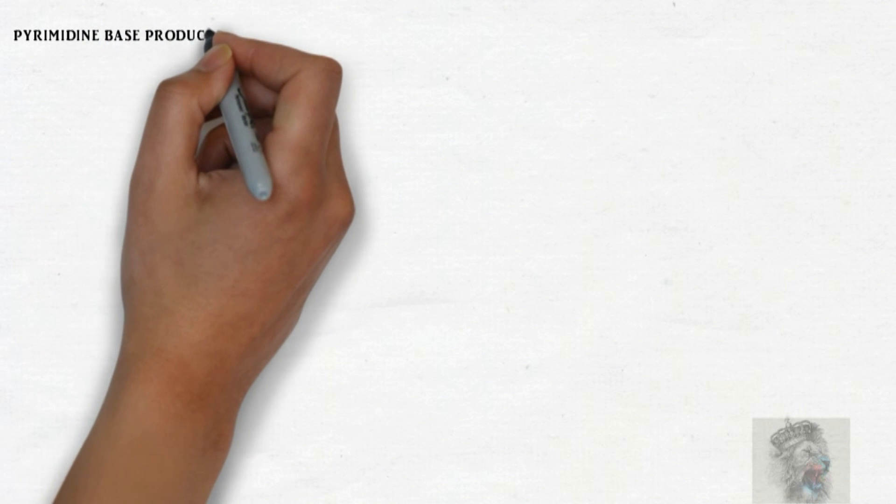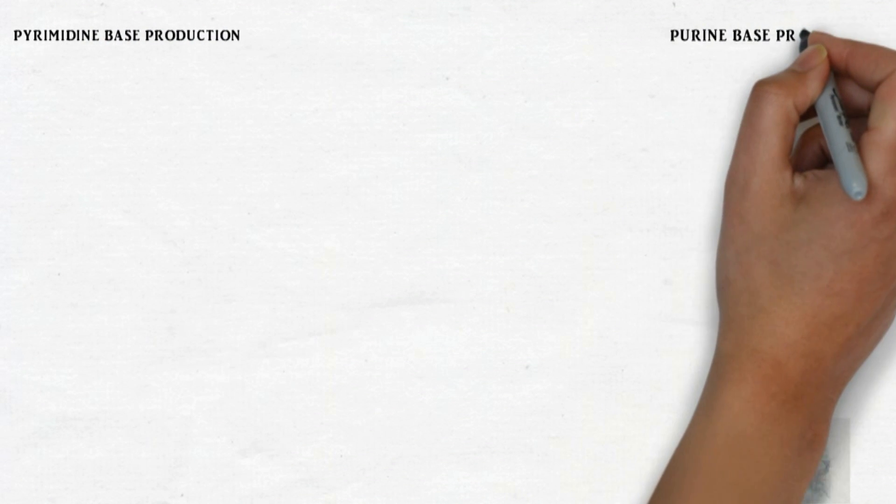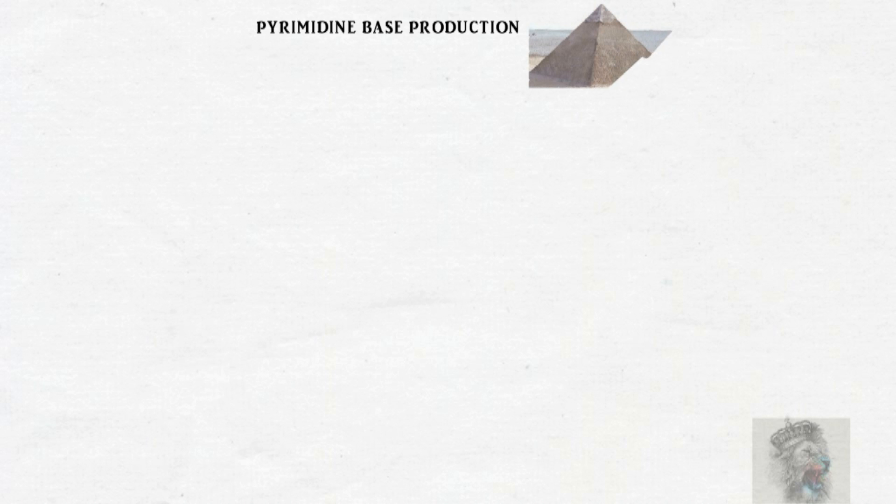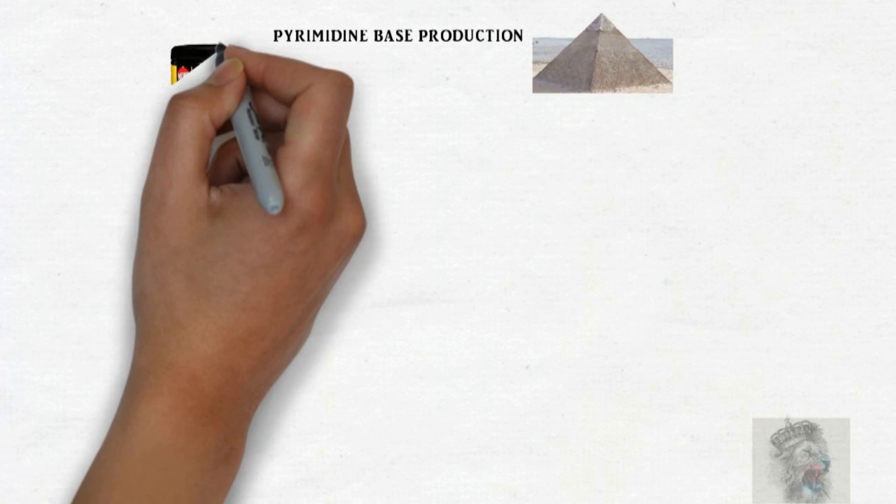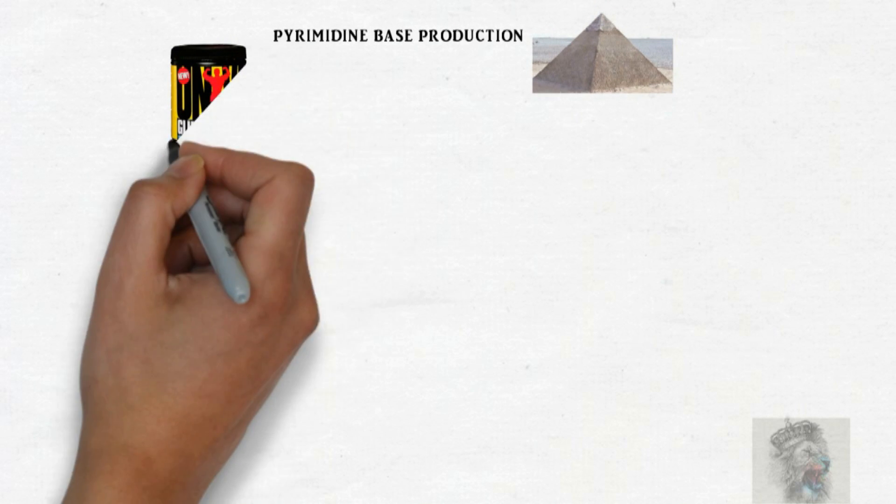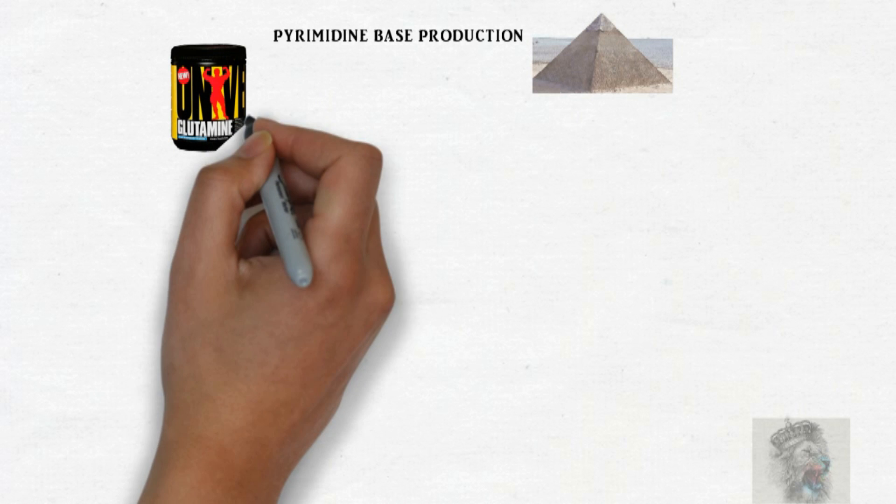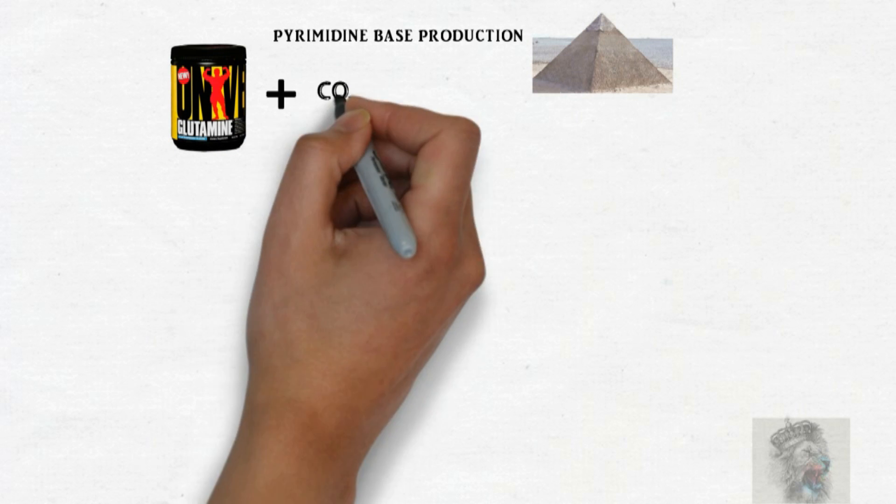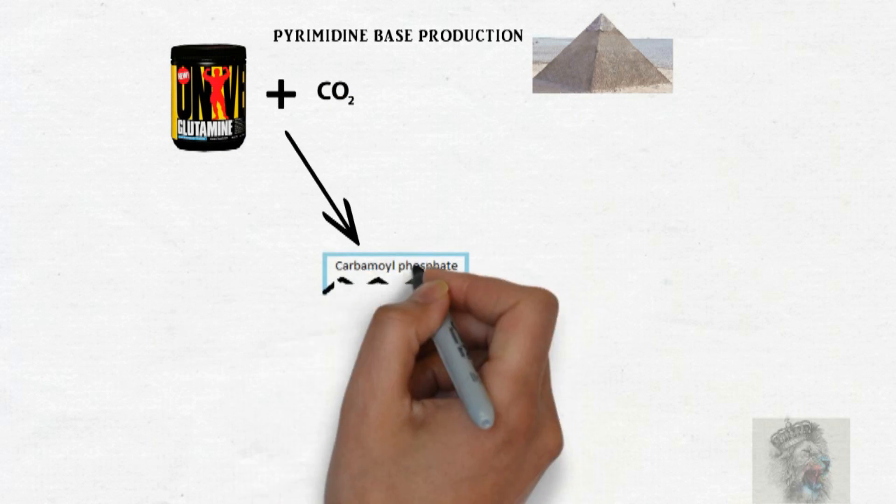Today I would like to speak to you about pyrimidine and purine base production. As an interesting fact, glutamine is used in bodybuilding as a supplement. This glutamine along with carbon dioxide converts into carbamyl phosphate using carbamyl phosphate synthase II enzyme and two ATP.